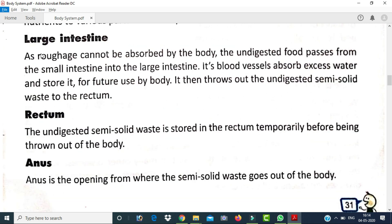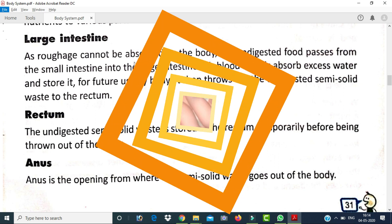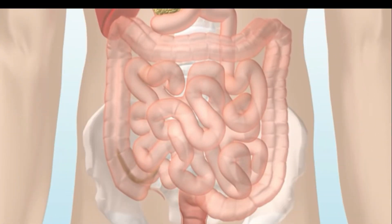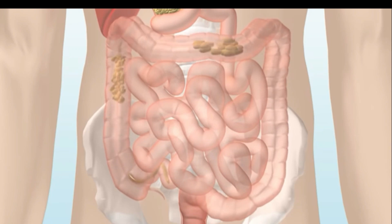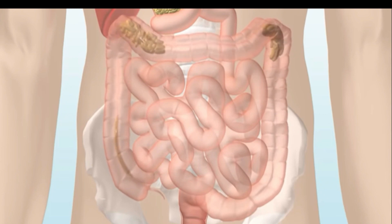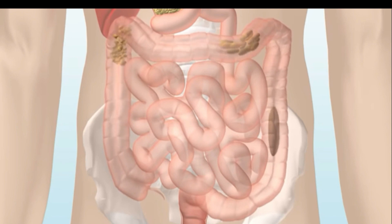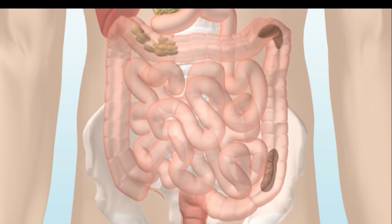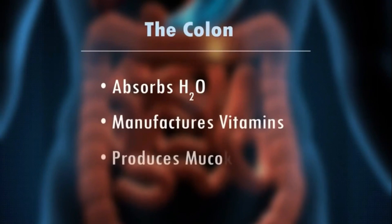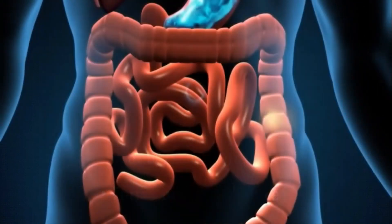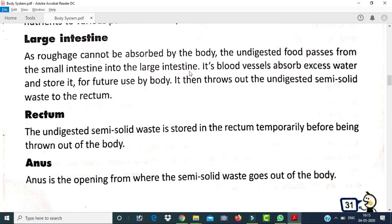Next is the large intestine. Roughage — the undigested food material — cannot be absorbed by the small intestine. Roughage is not digested by the body but is very important for us. The undigested food passes from the small intestine into the large intestine, where blood vessels absorb excess water and store it for future use. Digestion does not occur in the large intestine.